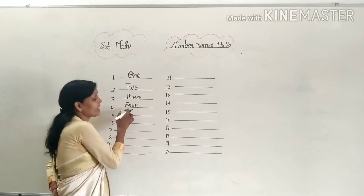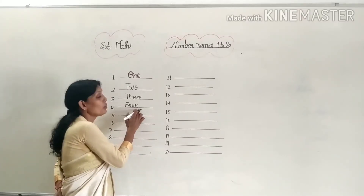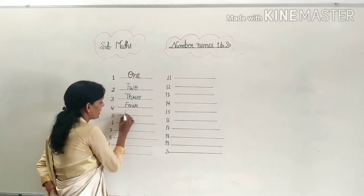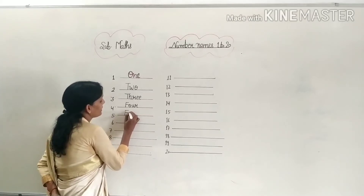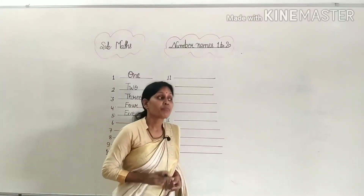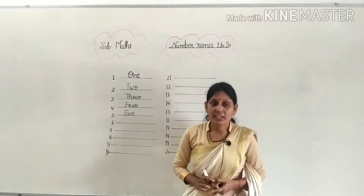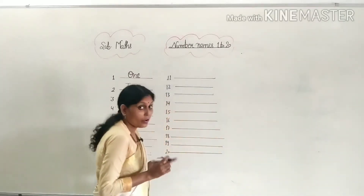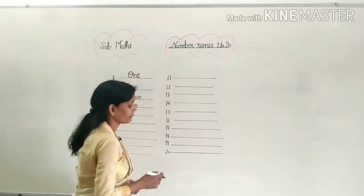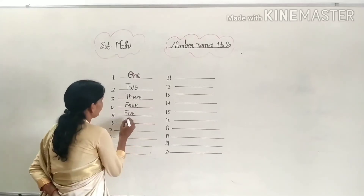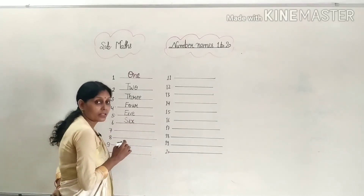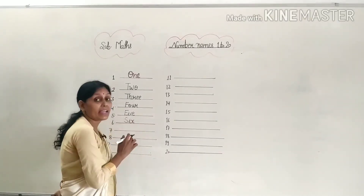What is the spelling of 4? F-O-U-R, 4. And next, 5: F-I-V-E, 5. What is the spelling of 5? F-I-V-E, 5. And next, 6: S-I-X, 6.